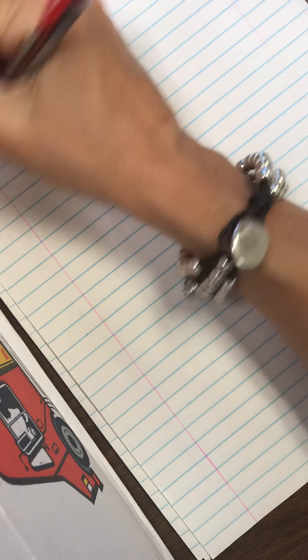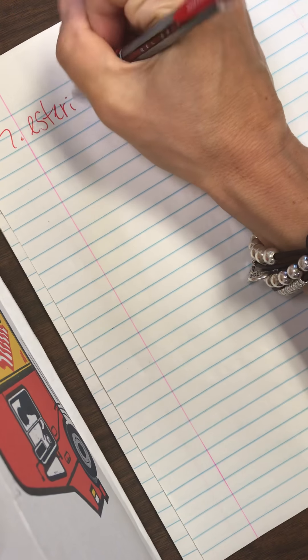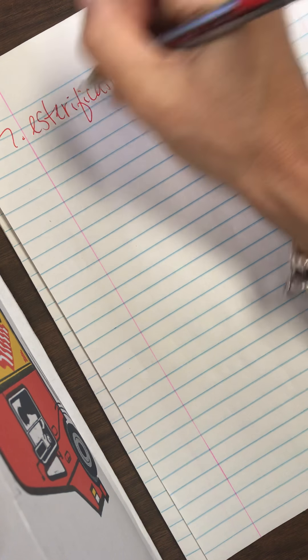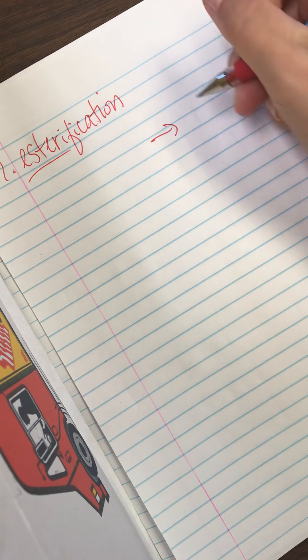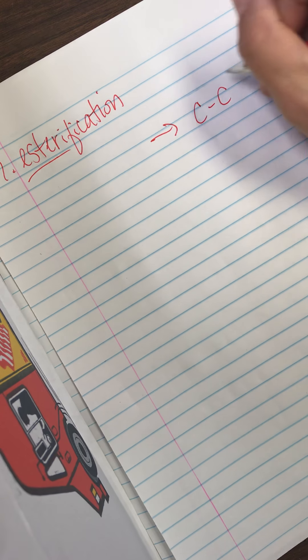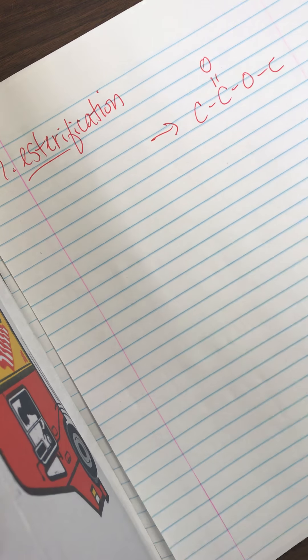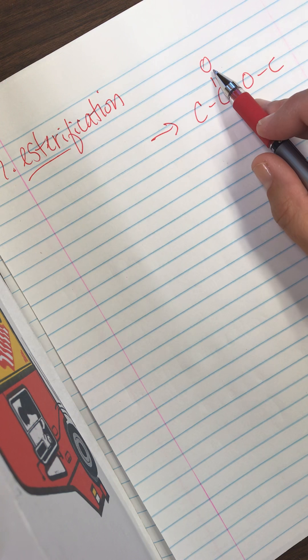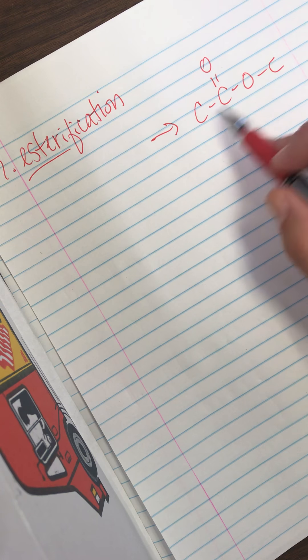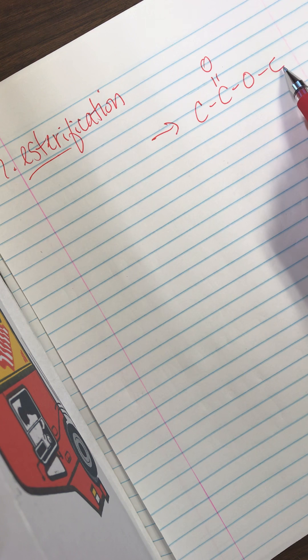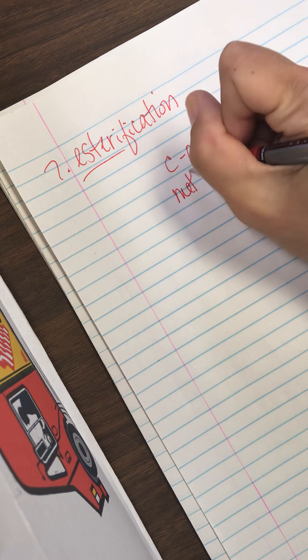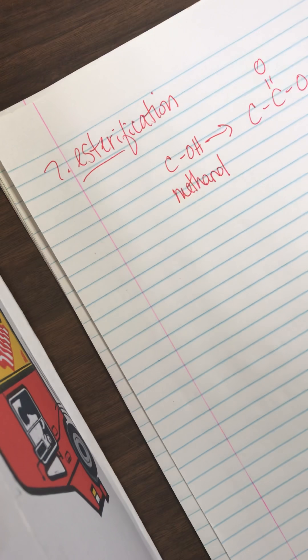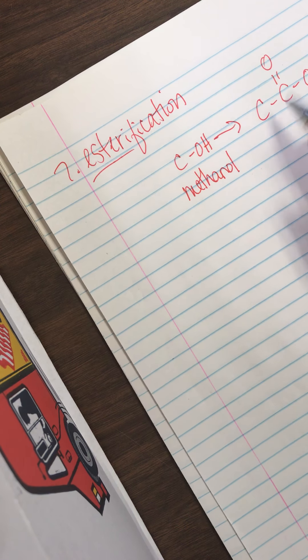All right. And the last organic reaction that you need to know is called esterification. And once again, it didn't let us down. The name tells us what it is. This is making an ester. So an ester is a molecule that looks like this. It's got a carbon with a double bonded O and an oxygen in the middle of a chain. So this one, this carbon over here that is the branch used to be an alcohol. So I put an OH on it. This would be methanol because it's only one carbon. And then this part used to be an organic acid.